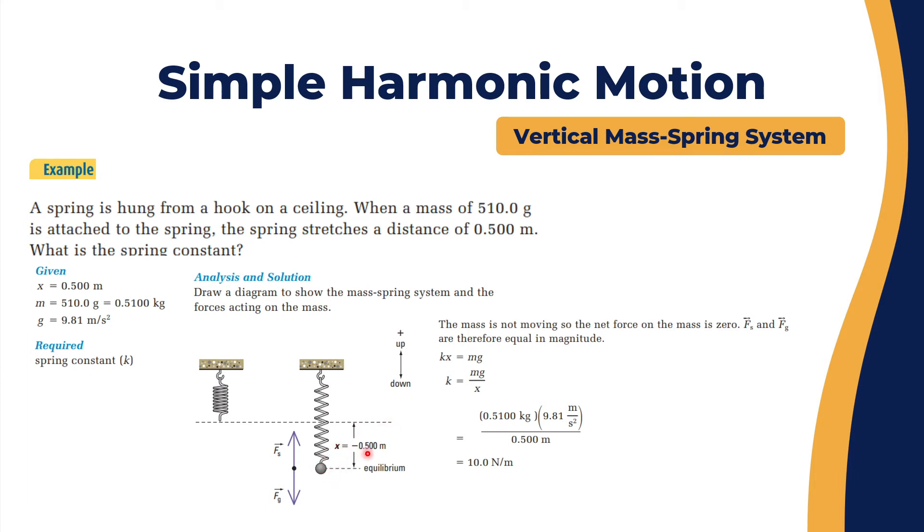What is the spring constant? We'll do a free body diagram analysis. We have F spring pulling upwards, F gravitation pulling downwards. For equilibrium, F spring equals F gravitation. F spring is kx, F gravitation is mg, so k equals mg over x. That's 0.51 times 9.81 over 0.5, which gives you 10 newtons per meter as the spring constant.